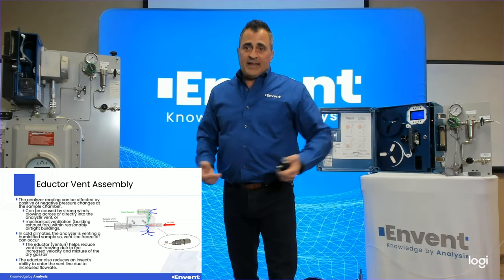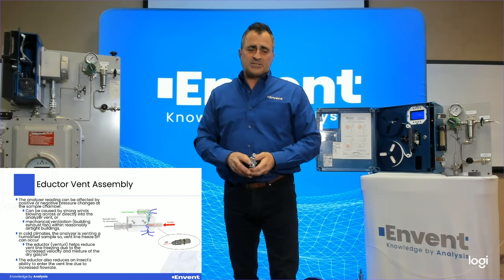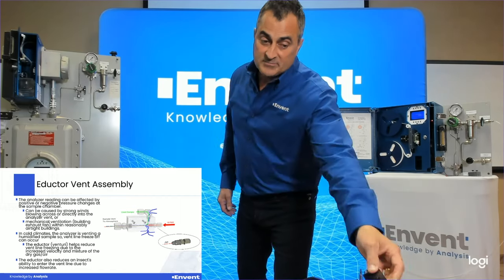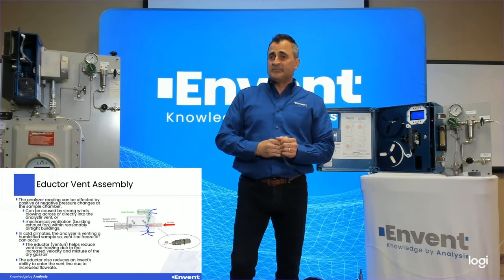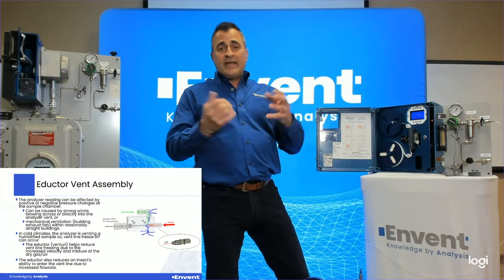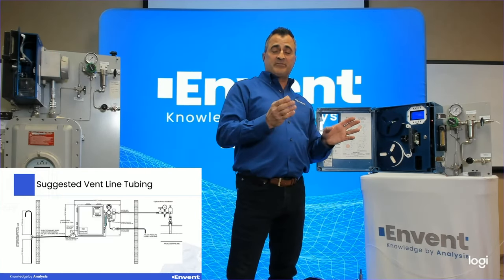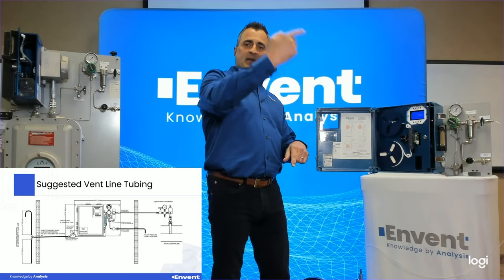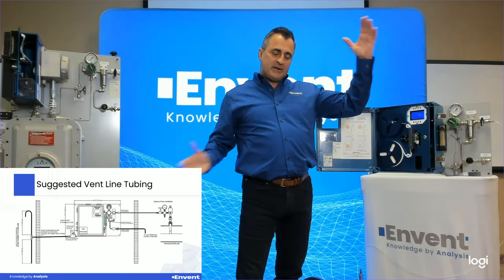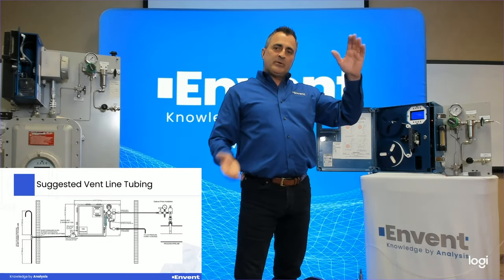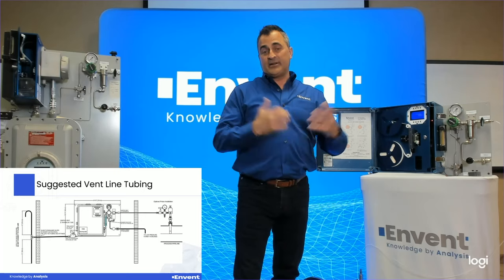Another advantage is we increase the flow out the vent so much that insects have a hard time getting in and building nests, which has occurred in the past. Downstream of the eductor — we call it a candy cane — it eliminates pressure going straight onto the vent header end. That was designed by Envent Engineering.